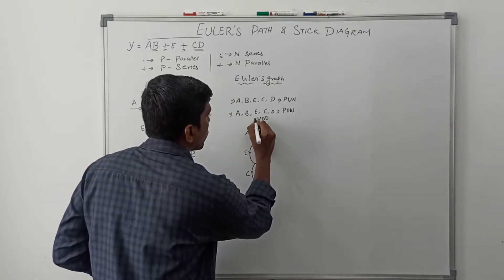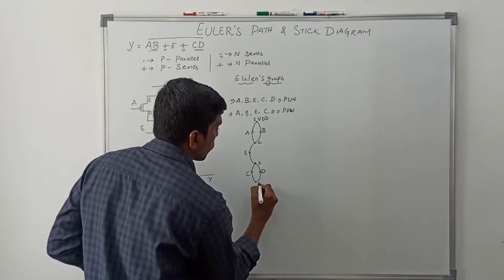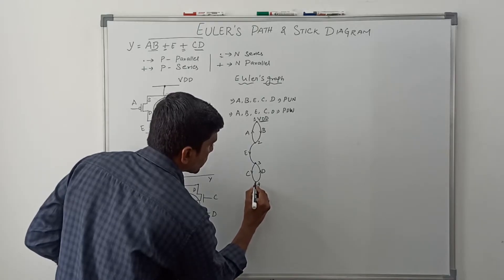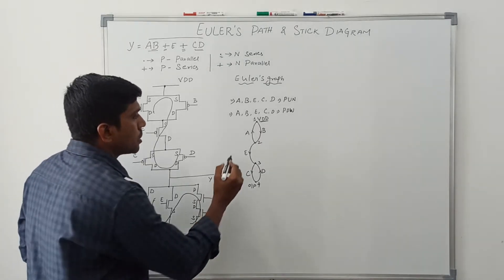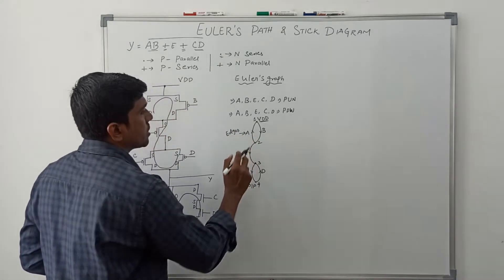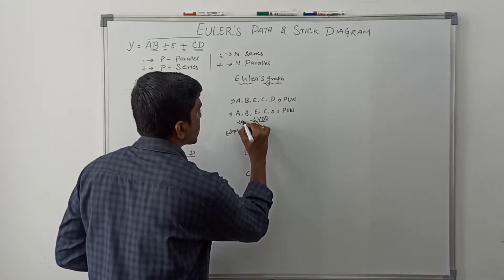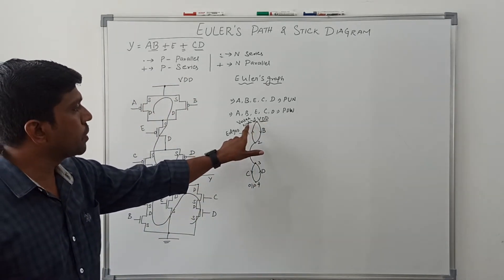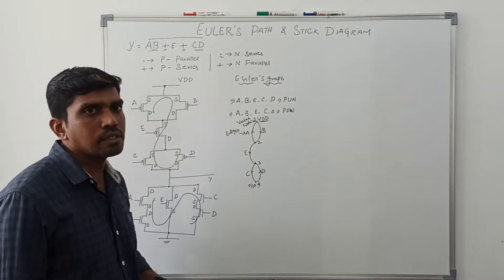In the Euler's graph, the connecting points are called nodes: node one, node two, node three, node four. The first node is connected to VDD and the last node (four) is connected to the output. Each transistor is called an edge. Each connecting point is called a vertex or node. In this Euler's graph, nodes and edges are each visited exactly once.